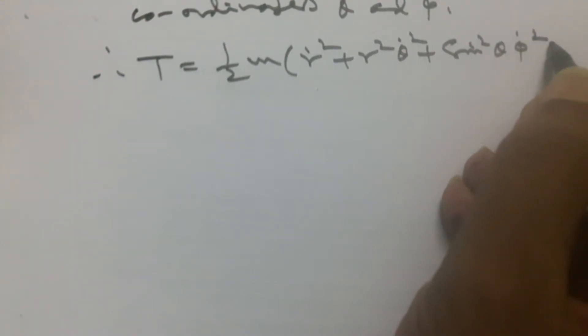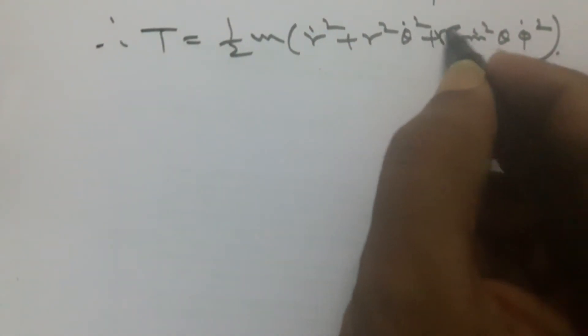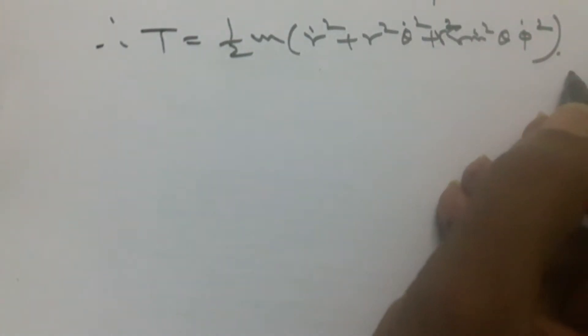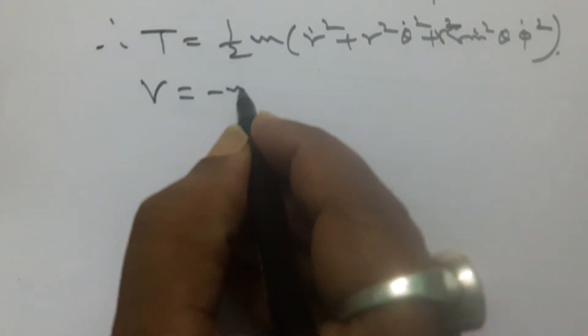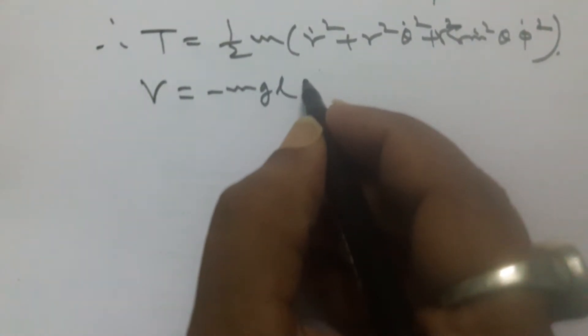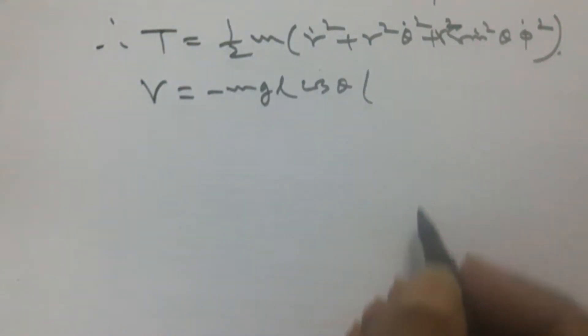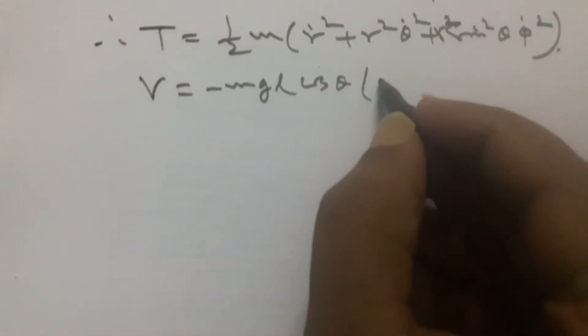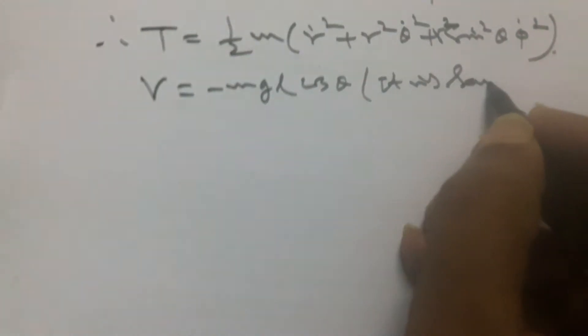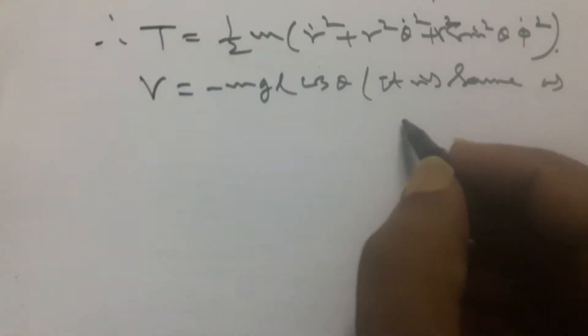The kinetic energy T will be given by half of m times r-dot squared, plus r squared theta-dot squared, plus r squared sine squared theta times phi-dot squared. The potential energy is minus mgl cos theta, which is the same as for a simple pendulum.